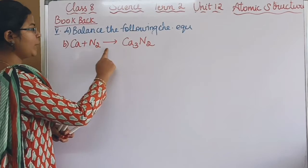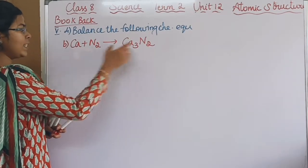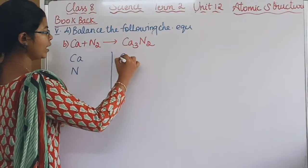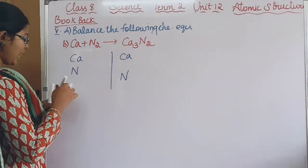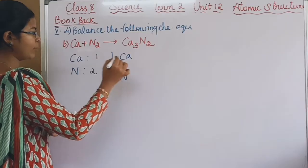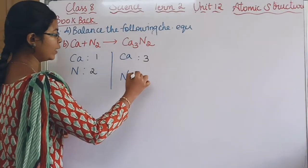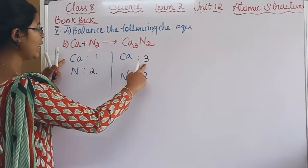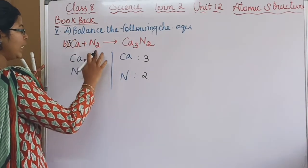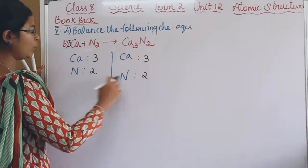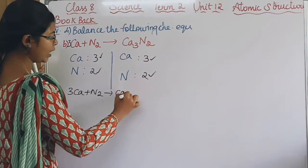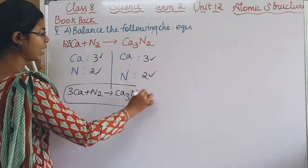The second equation: Ca plus N2 gives Ca3N2. This is the reactant and the product. Ca and N are the elements. Ca has 1 atom in the reactant and 3 in the product. N2 has 2 atoms in the reactant and 2 in the product. So the balanced chemical equation is 3Ca plus N2 gives Ca3N2.